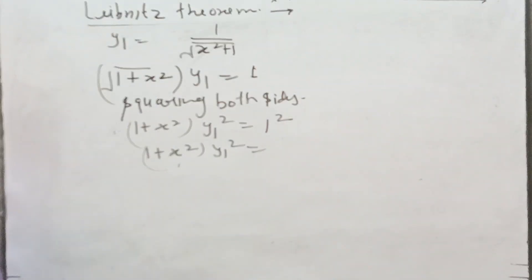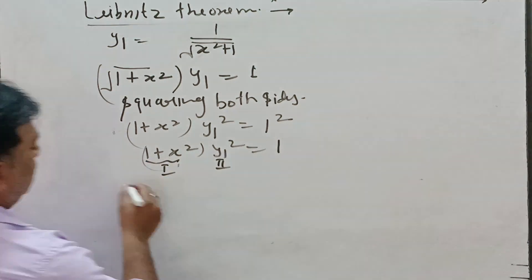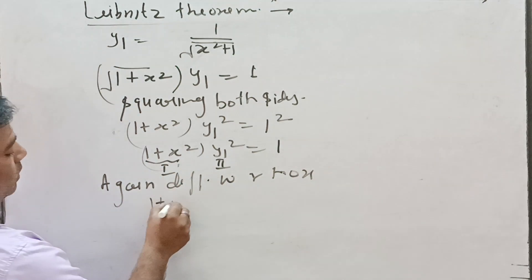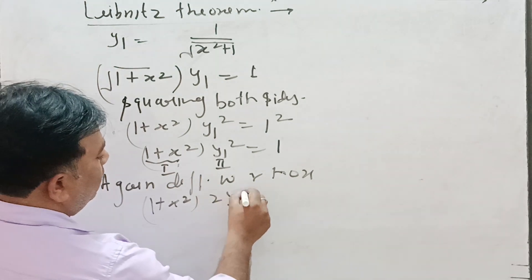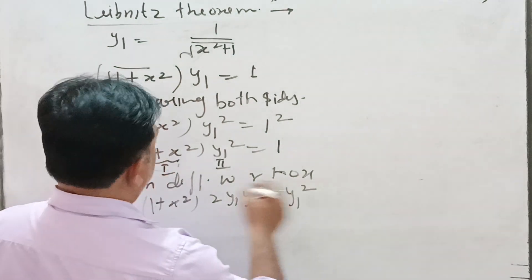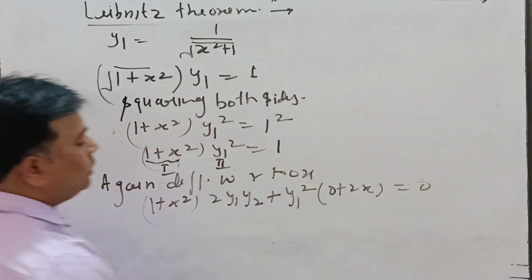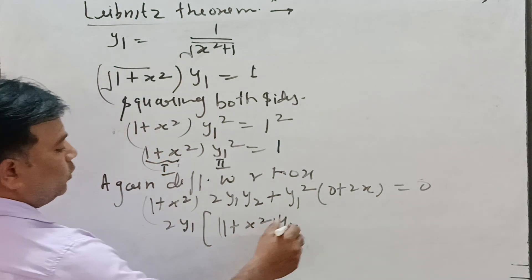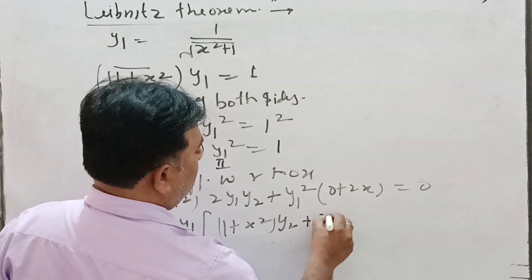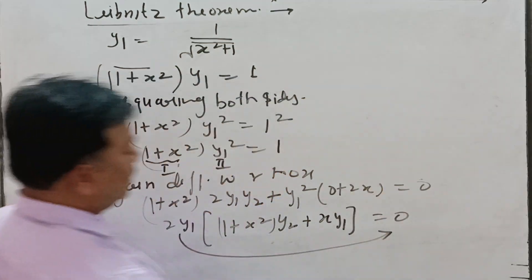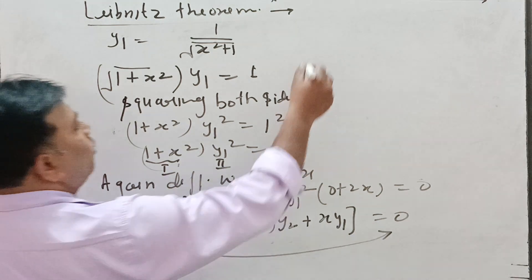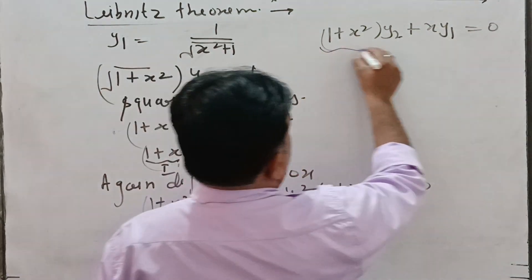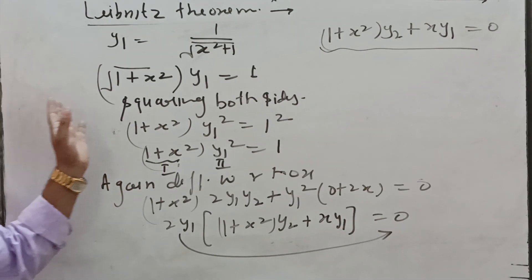Now differentiating (1+x²)y₁² = 1 again with respect to x. This is a product of two functions. Applying the product rule: (1+x²) · 2y₁ · y₂ + y₁² · 2x = 0. Taking 2y₁ as common: (1+x²)y₂ + xy₁ = 0. This is the result after the second differentiation, before applying the Leibniz theorem.